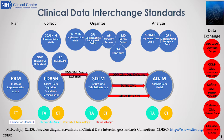It starts with plan, collect, organize, and analyze, as well as data exchange between the various phases. So it starts with planning — it has a protocol representation model based on controlled terminology. Then collection: we'll review CDASH, the operational data model, as well as the lab data model. Then organization: we'll review the study data tabulation model and all the different components. And then the analysis data model, referred to as ADAM.